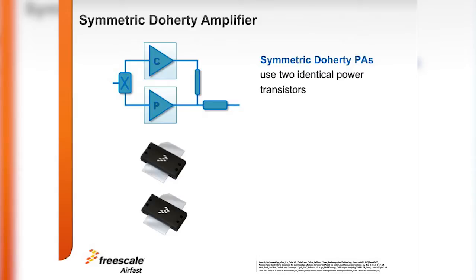These are often pre-matched LDMOS transistors, such as those offered by Freescale. They use identical input and output matching networks, which are typically printed on a PCB. Moreover, the two sub-amplifiers in the Doherty amplifier are operated 90 degrees out of phase. This is achieved by a 90-degree input power splitter, such as a hybrid splitter.